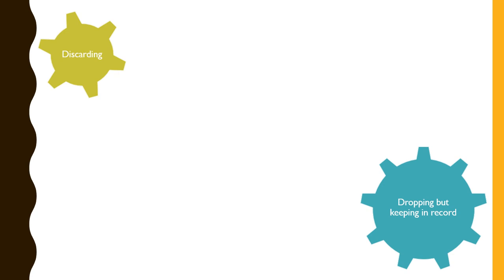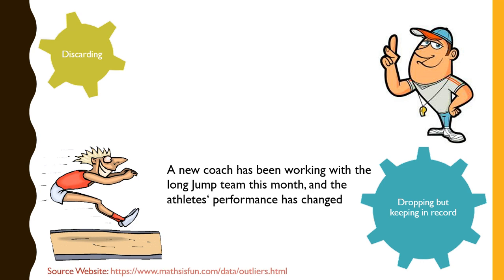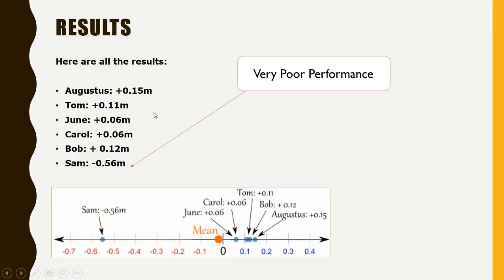The second method is dropping the outlier but keeping it in record. A very interesting example has been cited in the website mathisfun.com that a long jump coach has been working with a long jump team for a month and that has affected the performance of the athletes. Here's the result - we can see that everybody has showed an improvement, the positive sign reflects improvement, but there is one who actually did not show any improvement but whose performance has deteriorated very poorly. If we plot these values in the number line we can see while all of these performances lie somewhere over here, Sam's performance is way out of the line and lies at a far distance from the rest of the observations and thus is an outlier in the data set.